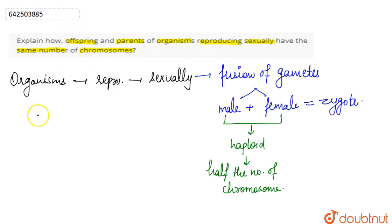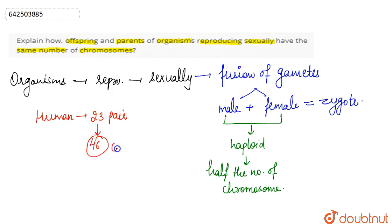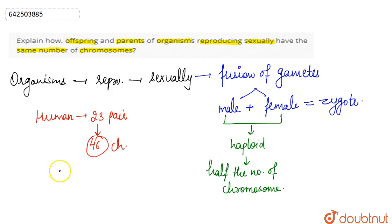For example, in humans there are 23 pairs of chromosomes, giving a total of 46 chromosomes. In the case of the male and female gametes, each gamete has just 23 chromosomes — not 23 pairs, but only 23 chromosomes each.